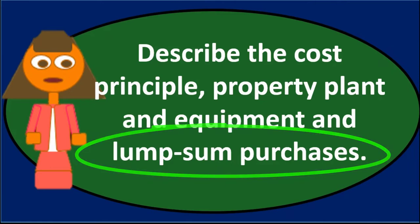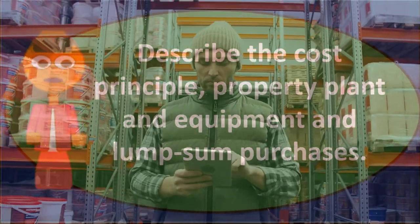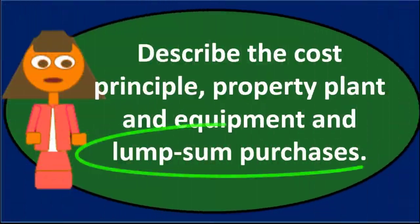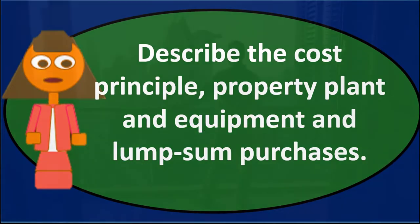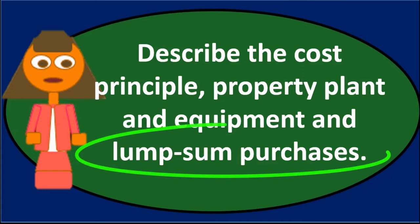A lump sum purchase is a type of purchase where we purchase different items that we'll have to record differently into one lump sum purchase. The typical lump sum purchase would be something like buying a building, land, and possibly improvements all in one lump sum.